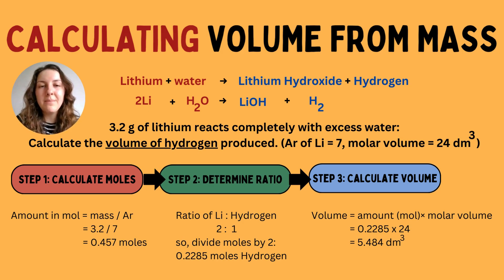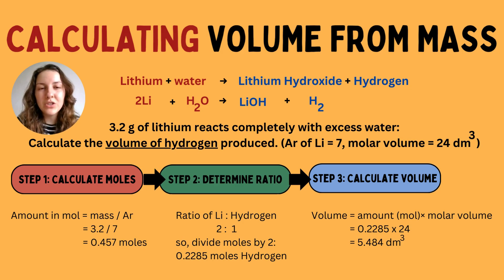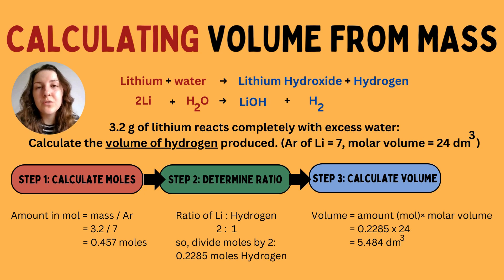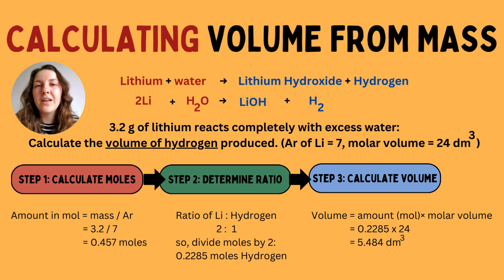We're calculating the volume from a mass. We have a reaction of lithium (symbol Li) — a group one metal that reacts vigorously with water because of its reactivity. Water has the symbol H₂O. They react together to form lithium hydroxide, which is an alkali, and hydrogen gas. We can test for hydrogen gas using a lit splint — it produces a squeaky pop. We can test for lithium hydroxide using universal indicator; being a hydroxide and an alkali, it will turn a purple-blue colour.